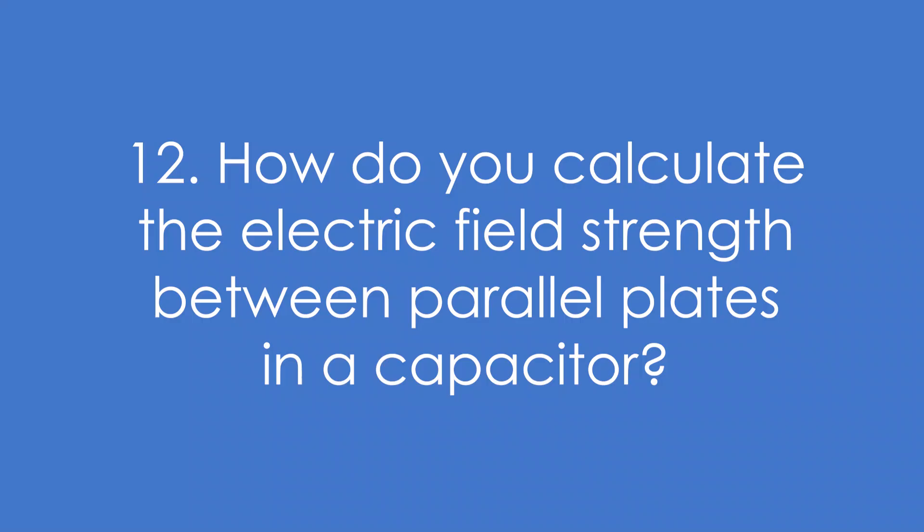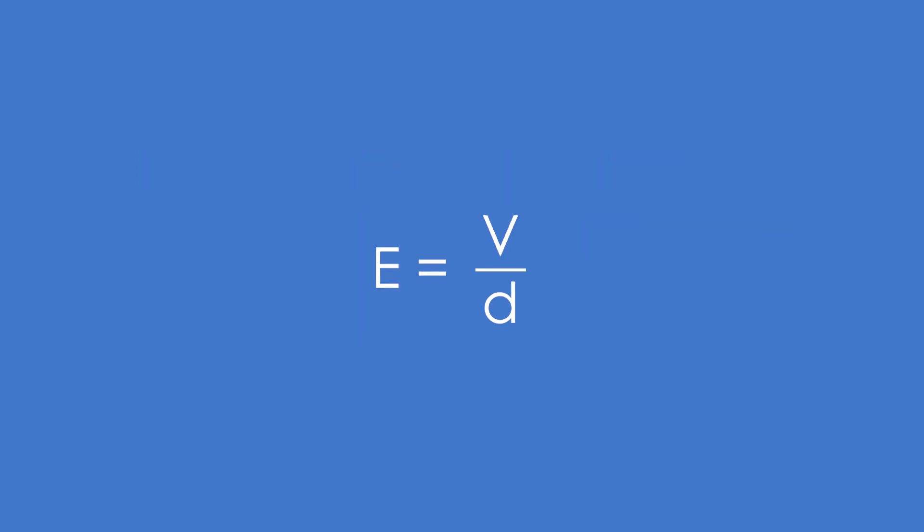Twelve, how do you calculate the electric field strength between parallel plates in a capacitor? It's equal to V over D, that's PD divided by the separation of the plates.